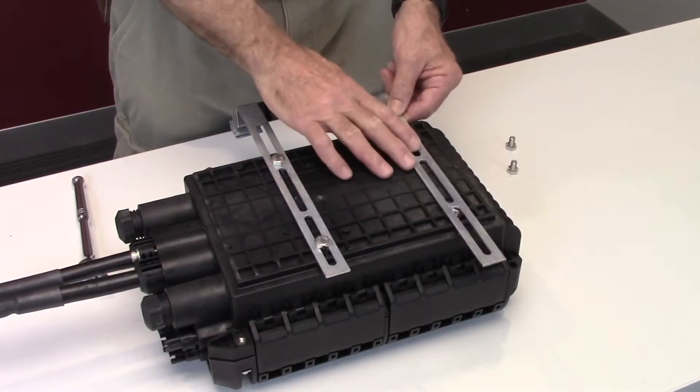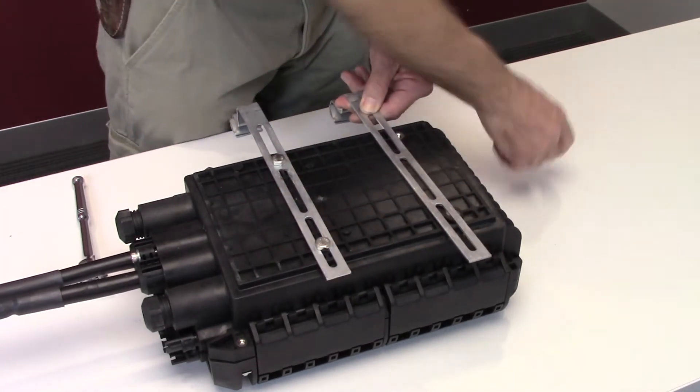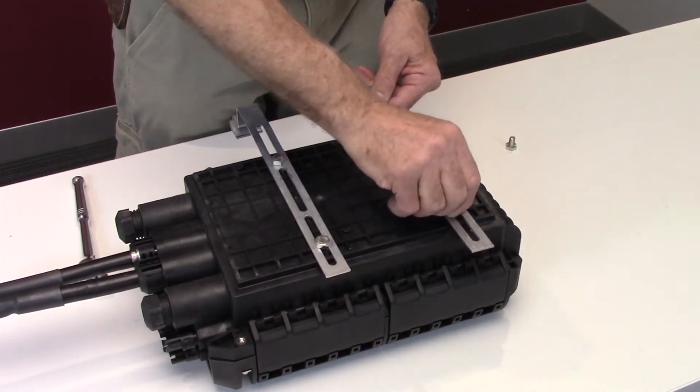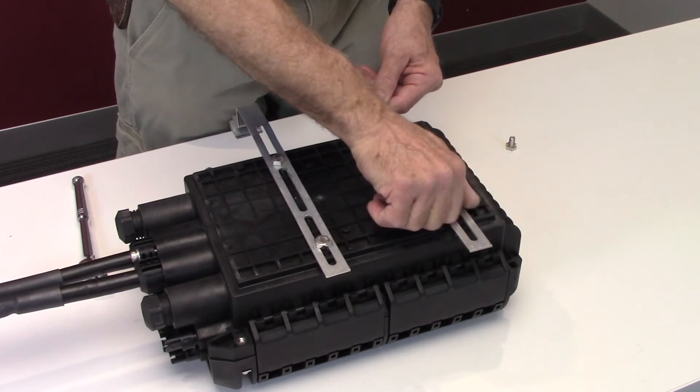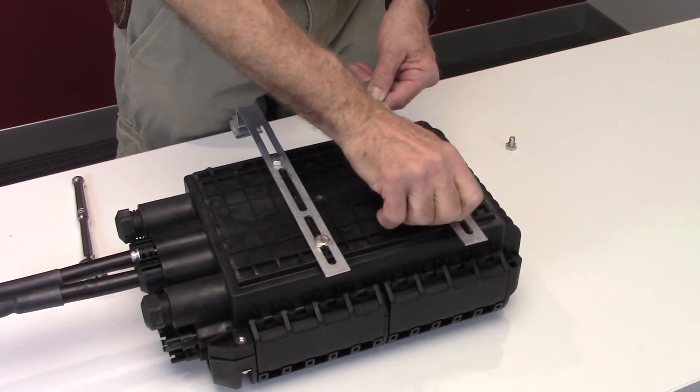For aerial installations, a bracket set must be attached to the back of the FSDC. The brackets are attached with the supplied bolts to the closure and tightened appropriately.